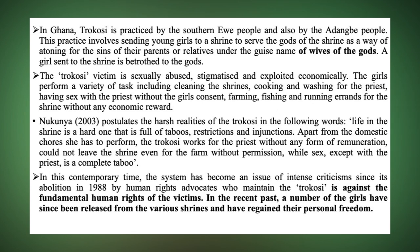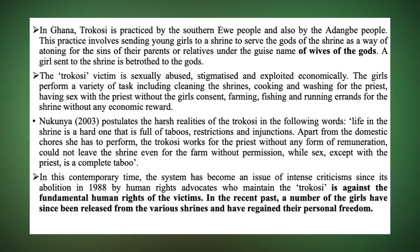In the Trokosi system, a girl is sent to serve in the shrine of a deity as a way of atoning for the sins of a relative. For instance, if Akosuwa's mother commits adultery and the punishment is banishment or death, Akosuwa is sent to serve in the shrine as atonement for the sin her mother committed. Most of the time, the young girls sent to live in the shrine are not the offenders — they are being used as payment for the offense of others.